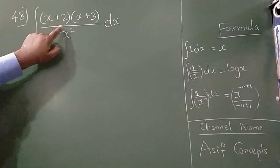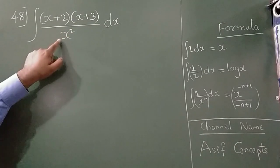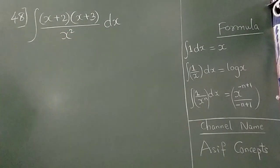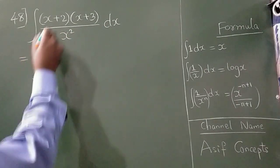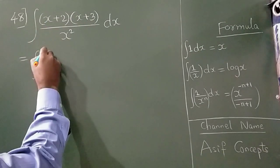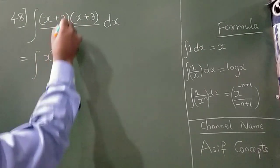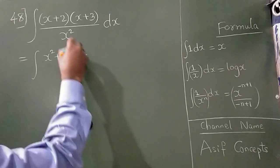Integration of (x+2)(x+3) divided by x² dx. So first I am going to multiply these two: x into x is x², 2 plus 3 is 5x, plus